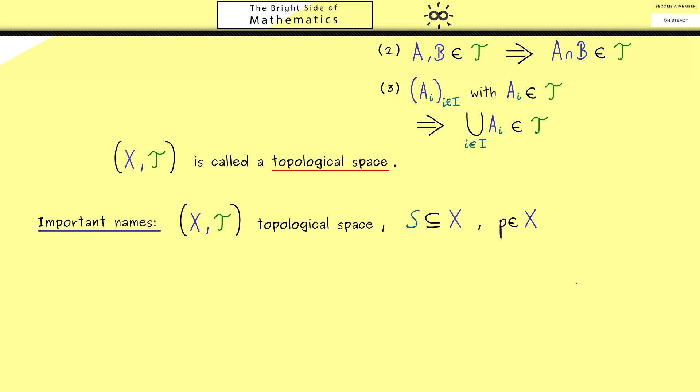Now all the names we give for p are to be read with respect to the fixed set S. Therefore, our visualization should look like this: we have the whole space X and inside we have the subset S. Then one possibility for p is that p is an element of S.